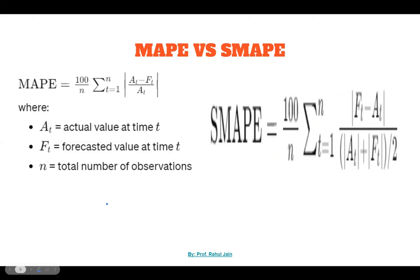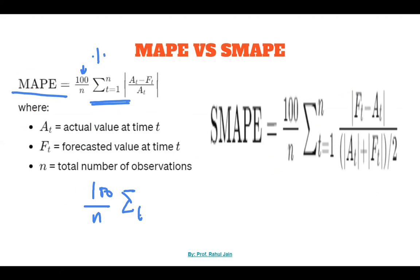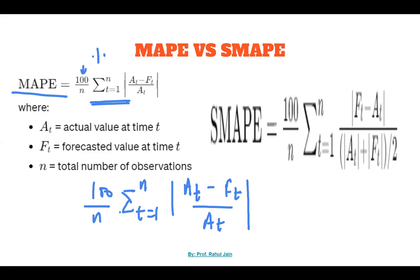Here is the formula for Mean Absolute Percentage Error. It is calculated as 100 divided by n, times the sum from t=1 to n of the absolute difference between the actual value at time t and the forecasted value at time t, divided by the actual value at time t. Multiplying by 100 over n gives us the Mean Absolute Percentage Error.